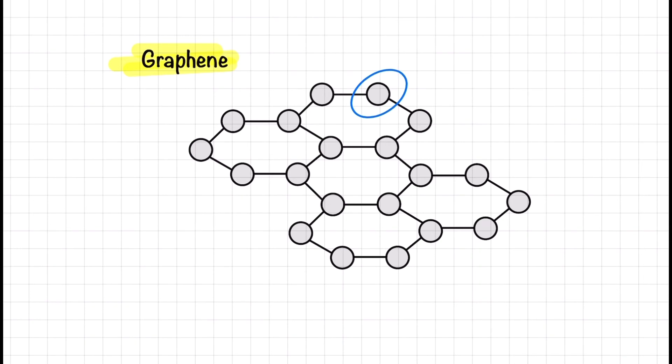Our third carbon allotrope is graphene and the science surrounding graphene is constantly evolving. Here we're going to look at some of the basics you need to be aware of for A-level chemistry.